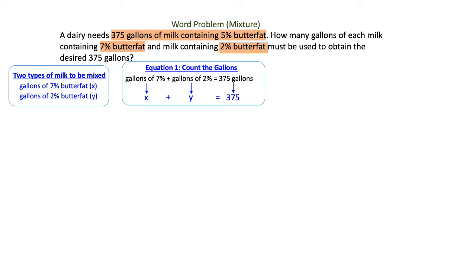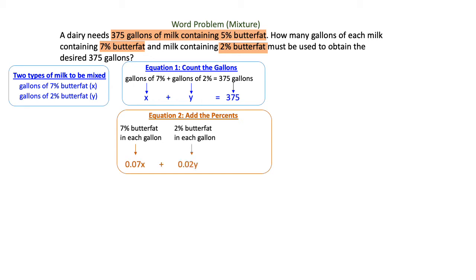For the second equation we're going to consider the percentages of butterfat in the mixture. So we can simply add the percents of the two types that we're mixing and then also put the percent on the total. So the 7% butterfat in each gallon is going to be 0.07x and then the 2% butterfat in each gallon would be 2% which is 0.02y.